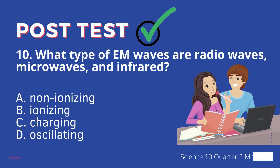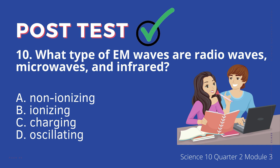10. What type of EM waves are radio waves, microwaves, and infrared? A. Non-ionizing, B. Ionizing, C. Charging, D. Oscillating.